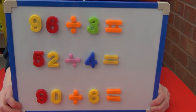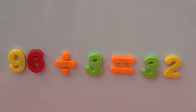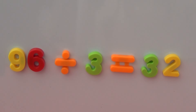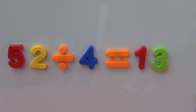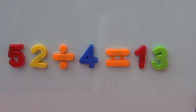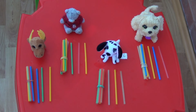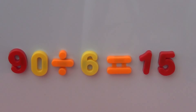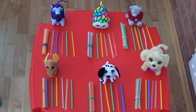I'm going to give you the answers in 3, 2, 1. 96 divided by 3 equals 32, so each teddy would have 3 tens and 2 ones. 52 divided by 4 equals 13, so each teddy would have 1 ten and 3 ones. 90 divided by 6 equals 15, so each teddy would have 1 ten and 5 ones.